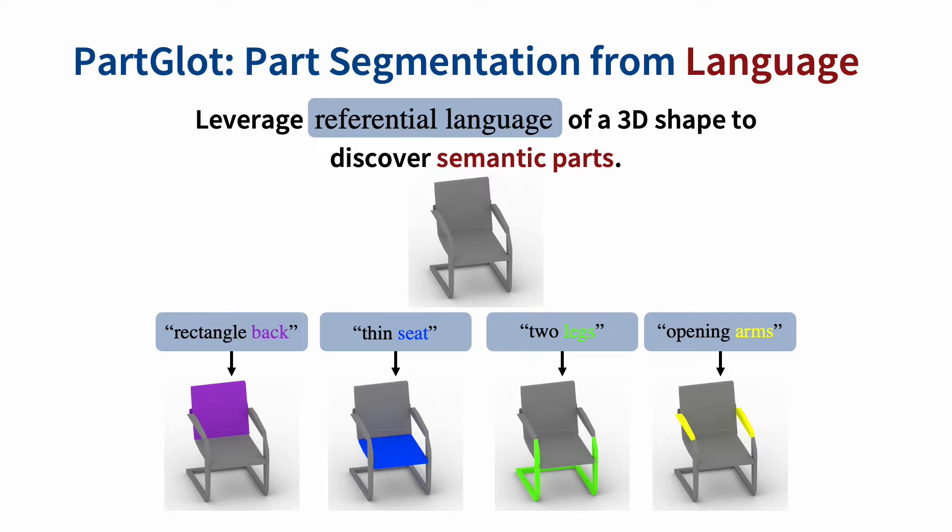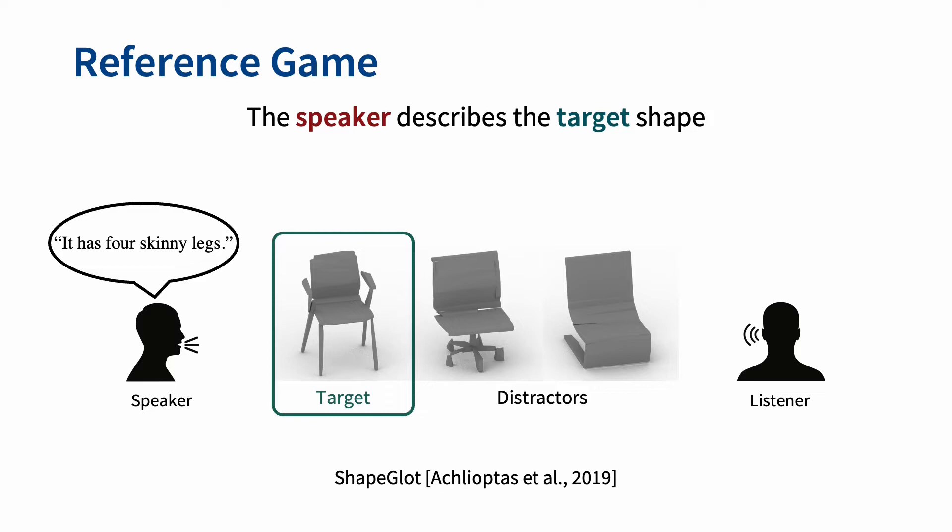We demonstrate that referential language of a 3D shape can be leveraged to guide the learning process to discover semantic parts of the 3D shape. A linguistic description of a 3D shape can be easily obtained from a speaker and listener conversation about the 3D shape, which we call a reference game.